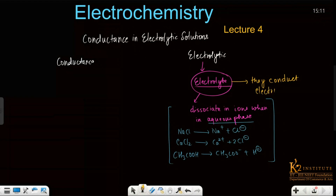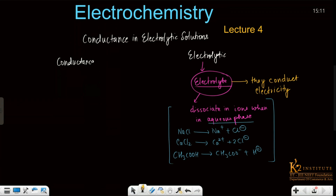The most important point is that electrolytes conduct electricity. Electricity is basically produced due to the movement of these ions. When these ions are produced, they will move, and with these movements we produce electricity. Now, the point is that there are different kinds of electrolytes. We can divide them into two specific categories.